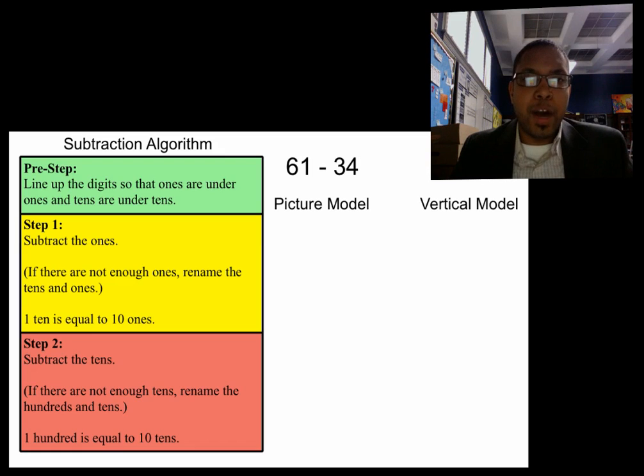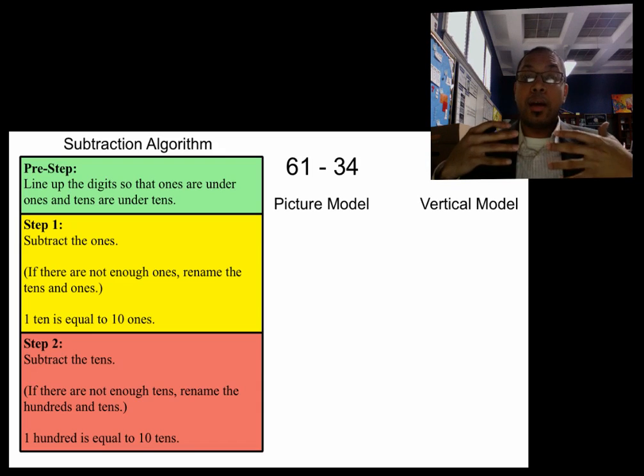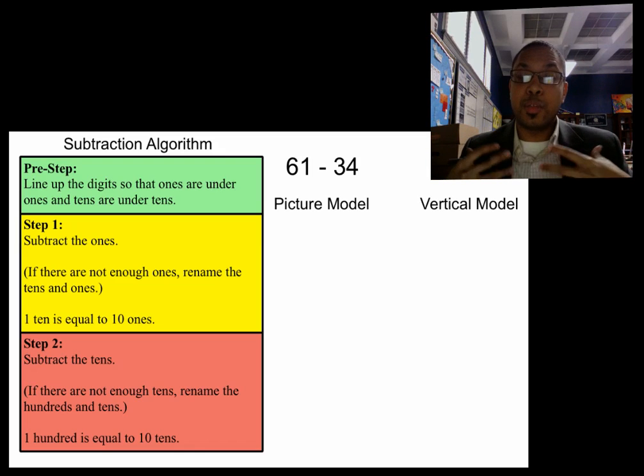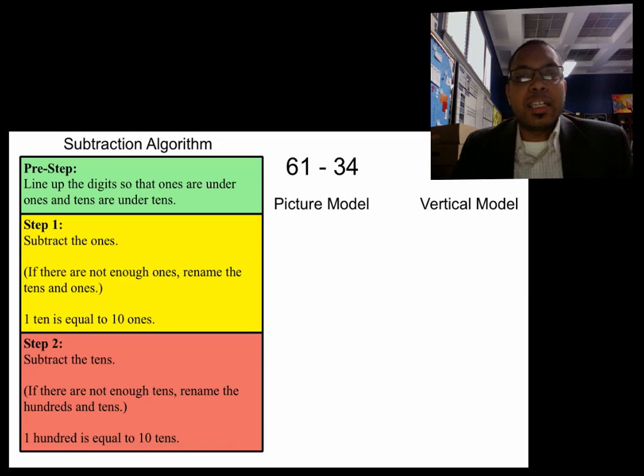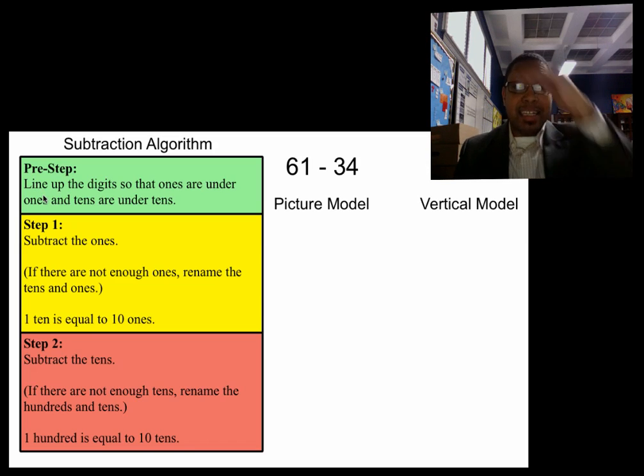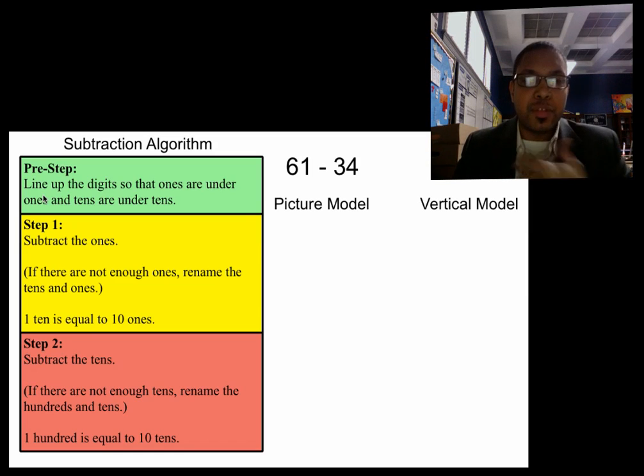The operation we're going to deal with today is subtraction, so we have a step-by-step way to subtract. We're going to follow the pre-step, step one, and step two. I have the pre-step in green because that's what you do before you begin the problem. The pre-step, the first step in the algorithm, is to line up the digits so that ones are under ones and tens are under tens. So you line up your digits first.